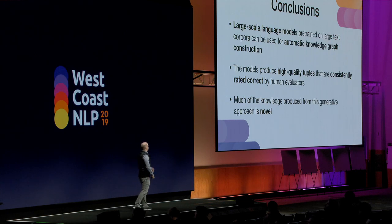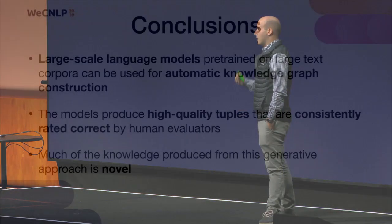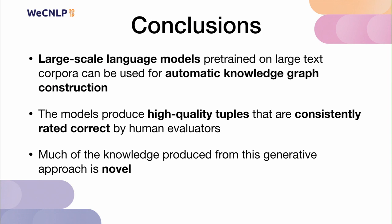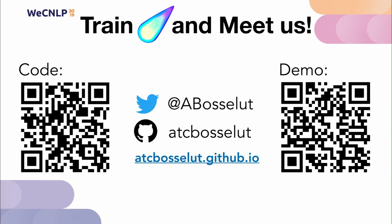In conclusion, language models can be used for automatic knowledge graph construction fairly effectively. They produce high-quality tuples that are consistently rated correct, and a lot of the knowledge produced is novel — we're not just repeating things found in the training set. I hope you'll go online, use our code to train your own Comet models using your own language models and knowledge graphs, and definitely check out the demo. It's really fun to play with and will show you what you can do with Comet in your own end tasks. Thank you very much.